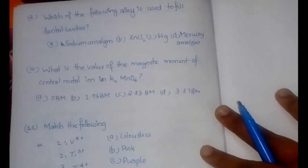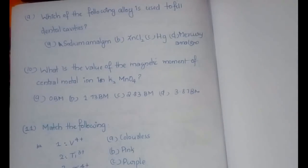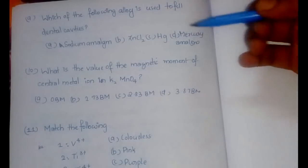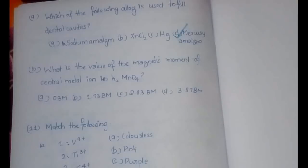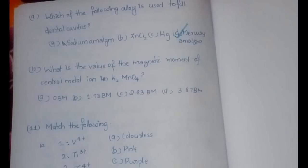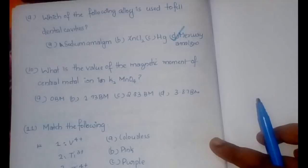Question 9 was asked in Delhi University PG entrance: which alloy is used to fill dental cavities? The answer is mercury amalgam. You can remember this because there is ongoing concern about dental fillings containing mercury, due to fear of mercury poisoning — many people complain against these kinds of dental fillings.